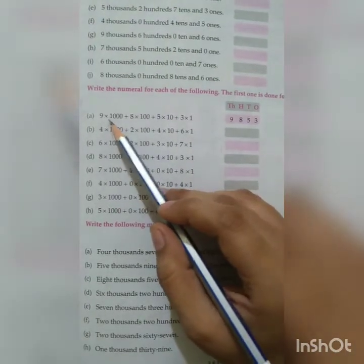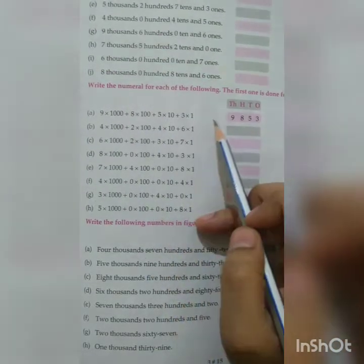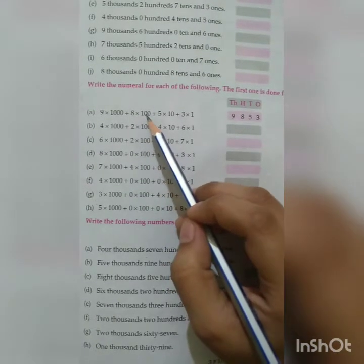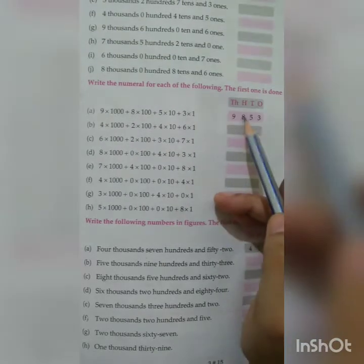These numbers are given in expanded form and you have to write them in compact form. Like this, 9,000. 9 is multiplied by 1000. That means 9 is at 1000's place. So 9 we have written under 1000. 8 multiplied by 100. That means 8 hundreds. 8 is at 100's place.